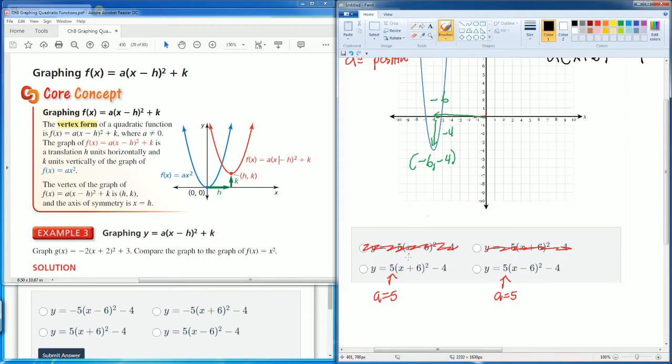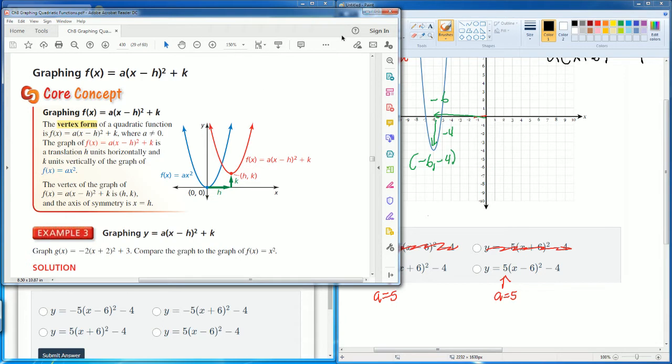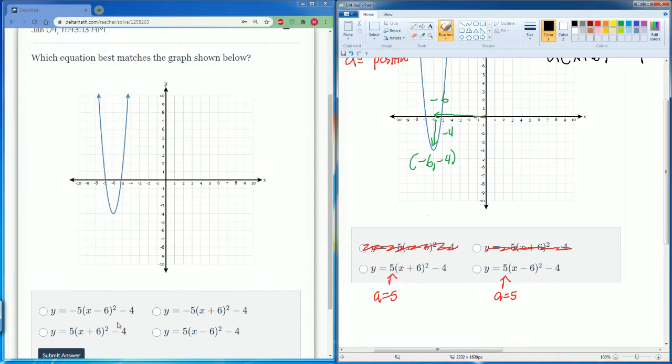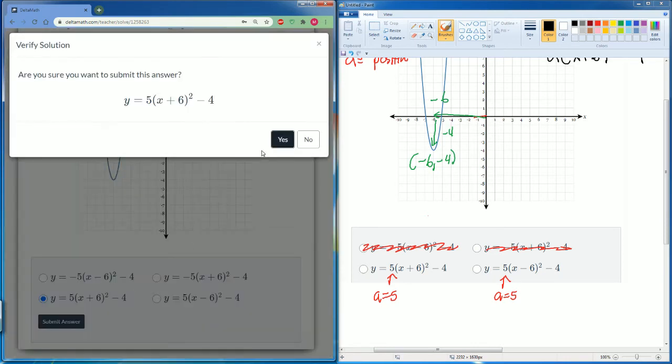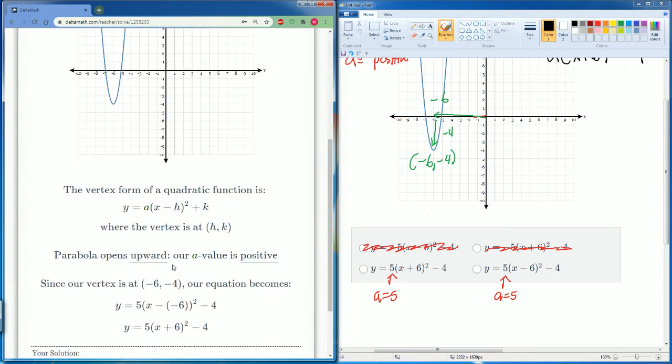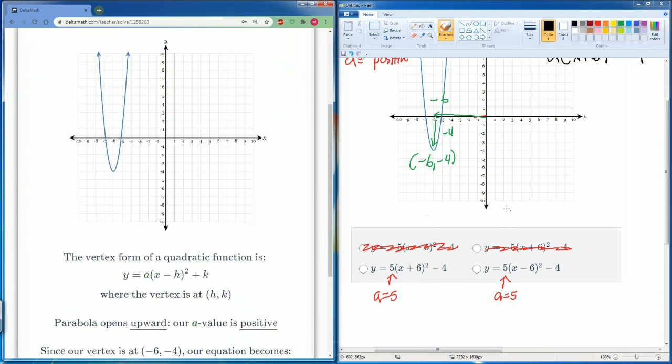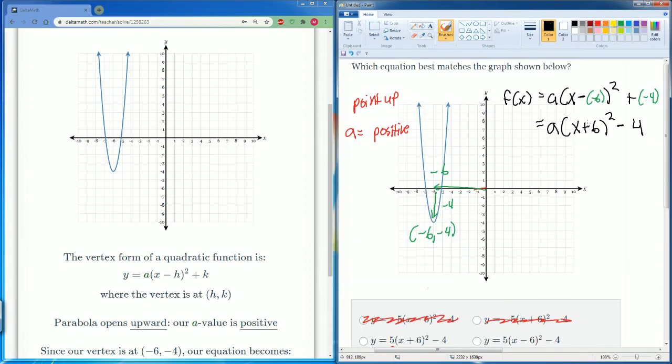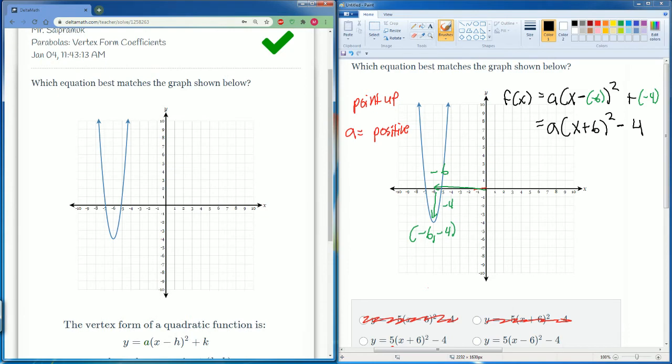The only one that has that would be this one - plus six squared minus four. That's based on the notes. So we would say it is this problem. It's plus six minus four. Submit your answer. Good job. So make sure that you can substitute it in here into the vertex form so you could get it correct. Let's do one more problem.